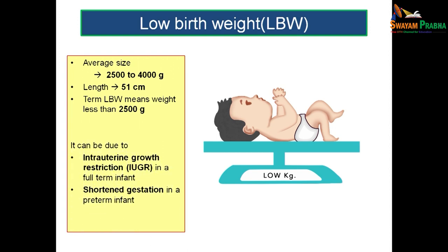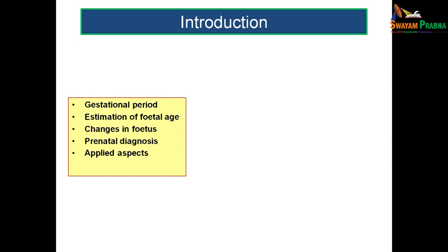What could be the reasons for a low birth weight infant? It can be due to intrauterine growth restriction in a full-term infant, or it can be due to shortened gestation in a preterm infant. These are the major reasons for a low birth weight baby. We need to know how the fetus develops from the third month of intrauterine period till birth.